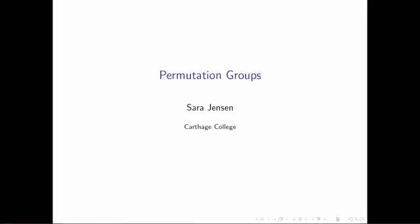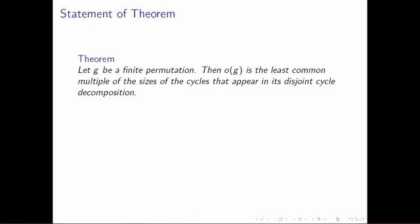In this video, we are going to do the proof of the theorem that I alluded to in class, which I'll put up right here and then say out loud. Let's suppose that g is an element of a permutation group — a finite permutation. Then the order of that element g is the least common multiple of the sizes, or the cycle lengths, that appear when you write it in its disjoint cycle notation.